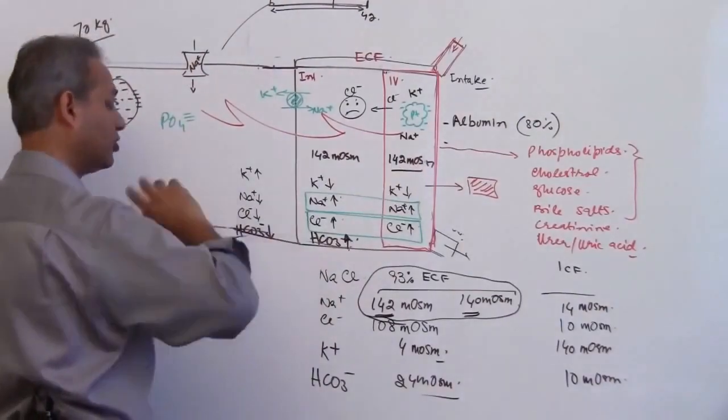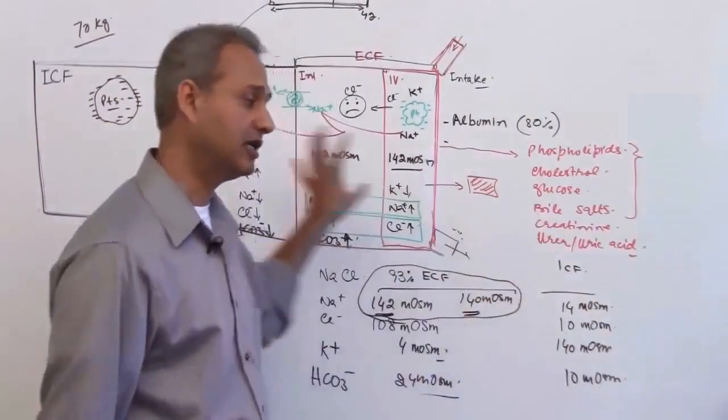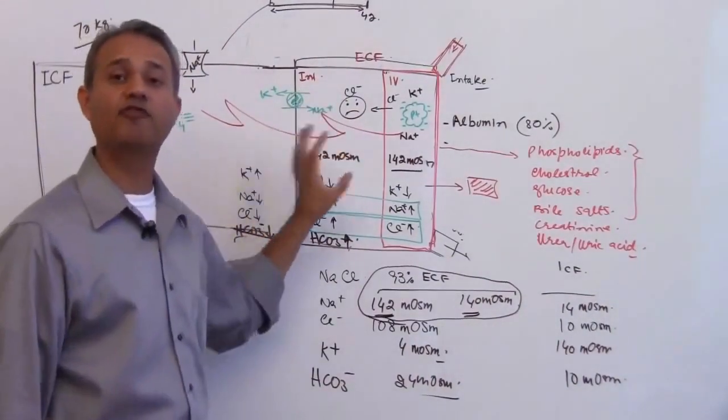Bicarbonate, very important for acid-base balances. It is a buffering system, more on the outside. Chloride is a buddy of the sodium, so wherever sodium is, the chloride is there. So more on the outside, less on the inside. Water of course would follow.